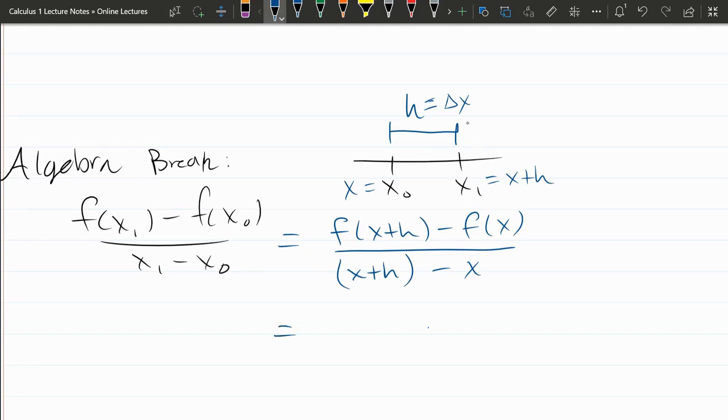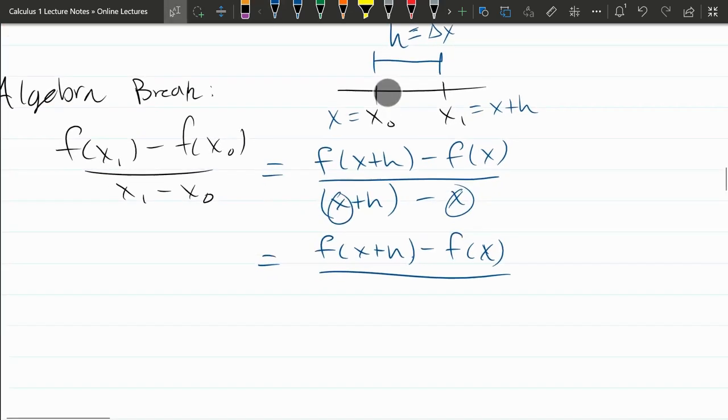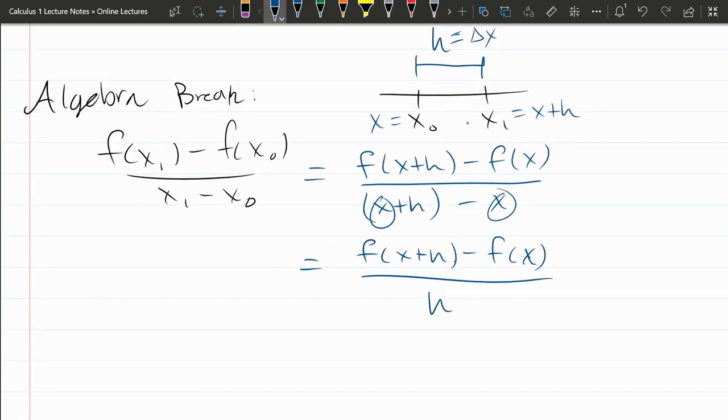Let's simplify this. The numerator does not simplify. Denominator however, you have x minus x that cancels out, those x's disappear, and you're just left with h in the denominator. This is called the difference quotient.